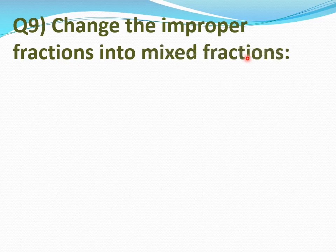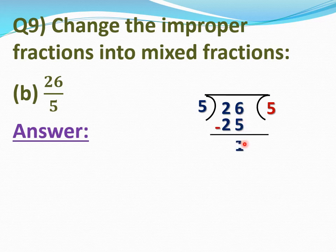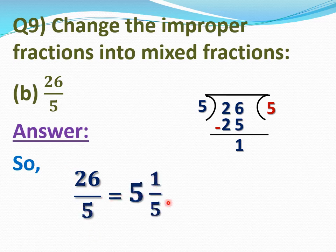Now question number 9: change the improper fractions into mixed fractions. B part, 26 by 5. We have to change 26 by 5 into a mixed fraction. First divide 26 by 5. 5 fives are 25; subtraction gives remainder 1. Hence quotient is 5, remainder is 1, and divisor is 5. Write quotient as whole number, remainder as numerator, and divisor as denominator. So 26 by 5 equal 5 whole 1 by 5.